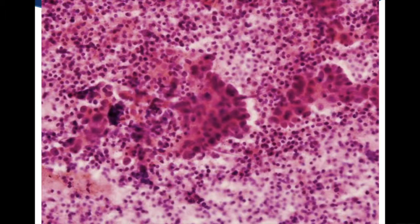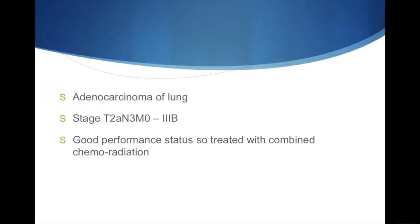Here is an example of the on-site cytology. You can see some lymphocytes in the background which are normal, but in the middle and over here are clumps of large abnormal cells with pleomorphic nuclei that look clearly malignant. So we know we're in a lymph node and we've aspirated malignant cells. This turned out to be adenocarcinoma of the lung, stage 2A, and given that the mediastinal lymph node on the right side was abnormal, that means there's a contralateral mediastinal lymph node metastasis staging it as N3. This patient was treated with combination chemo-radiation with curative intent.